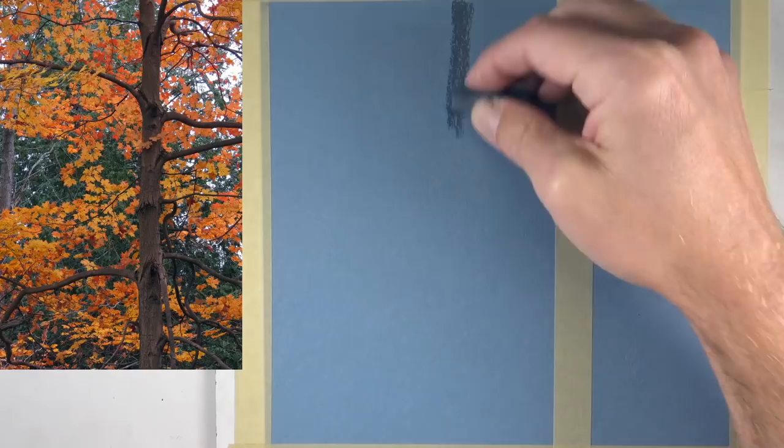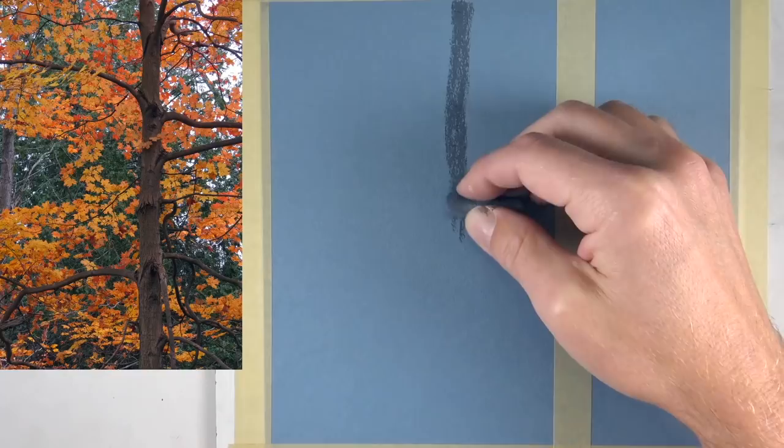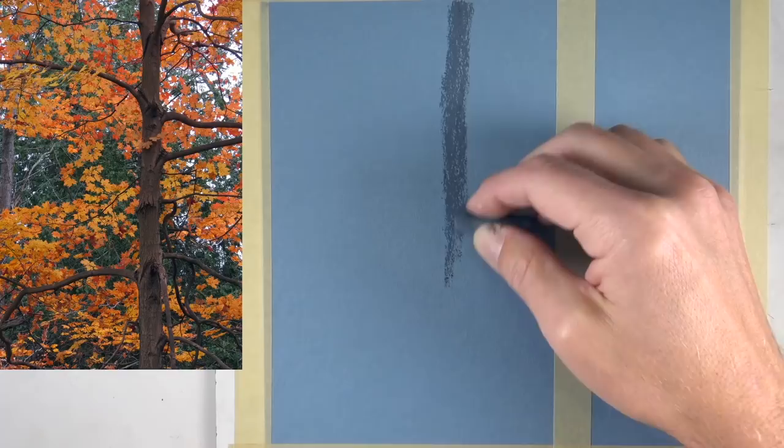I'm working on a toned surface here, this is Canson-Mittance pastel paper and I'm using the less textured side. There's two sides of the paper, both sides are acceptable for creating pastel drawings. We'll start here by defining the main trunk of the tree using a darker gray.